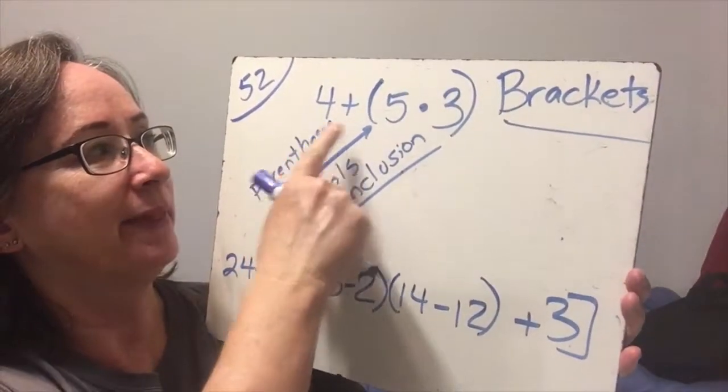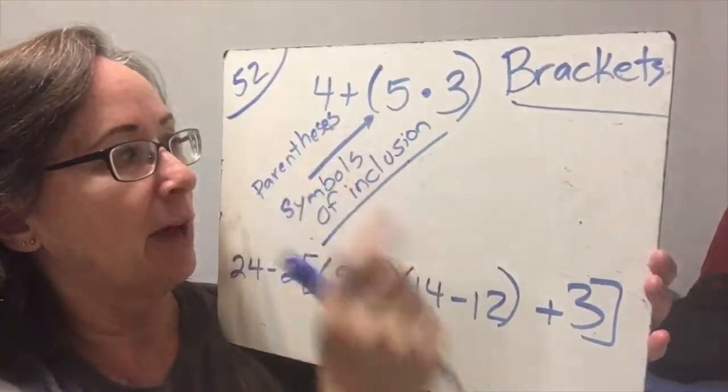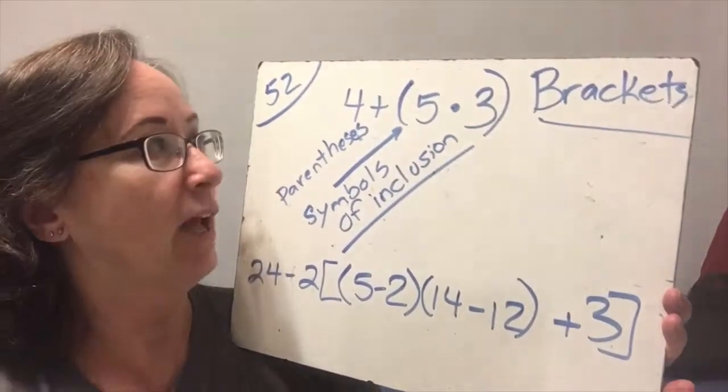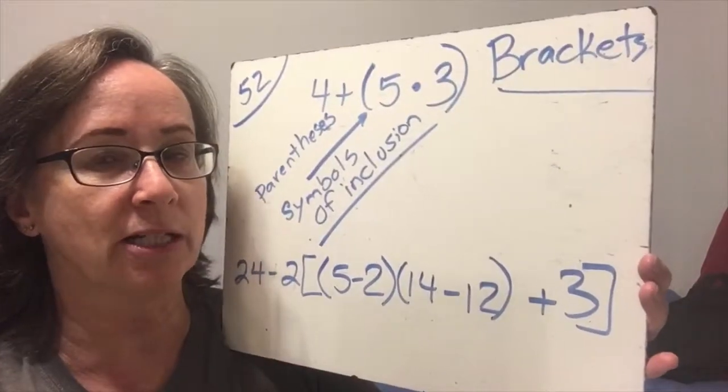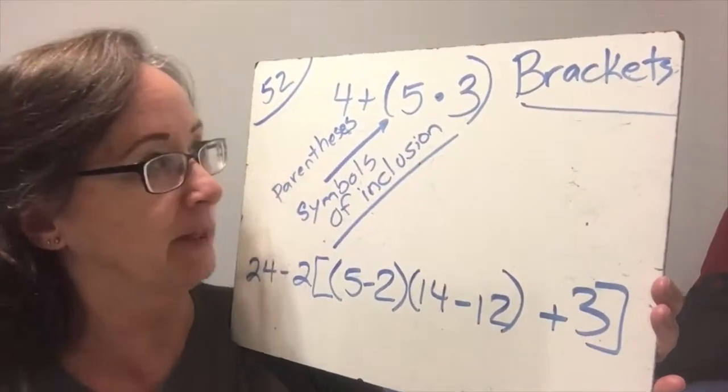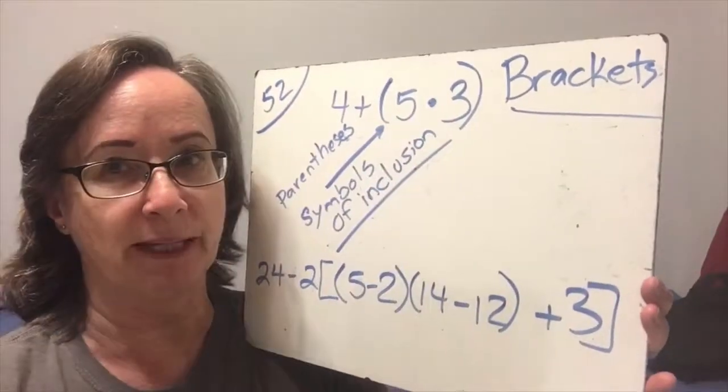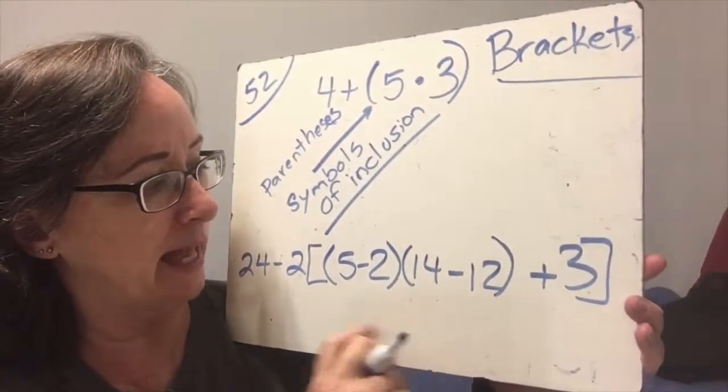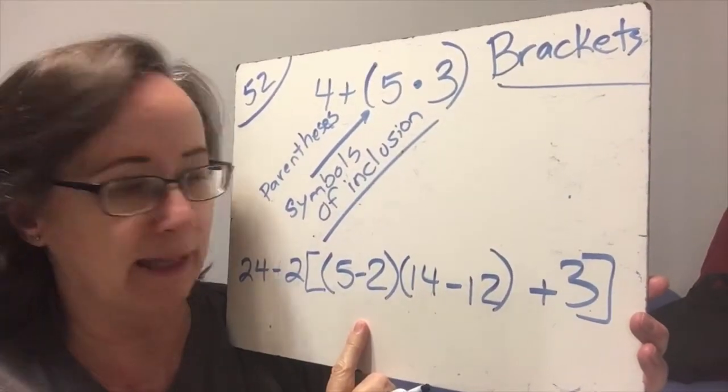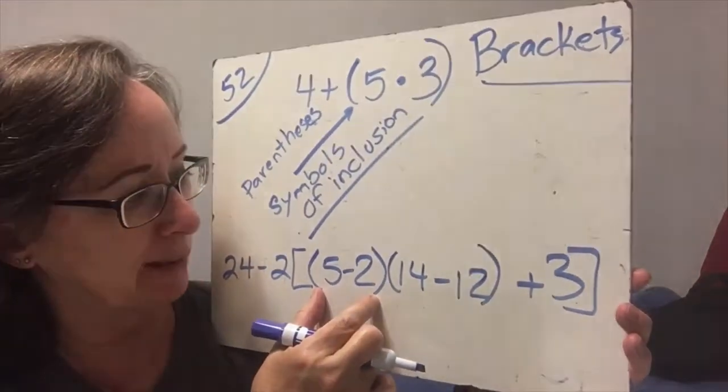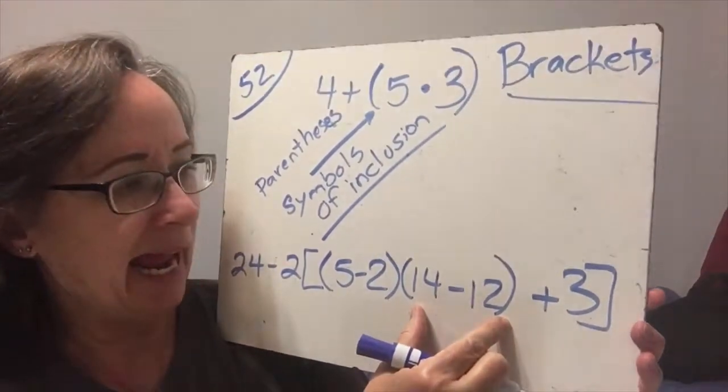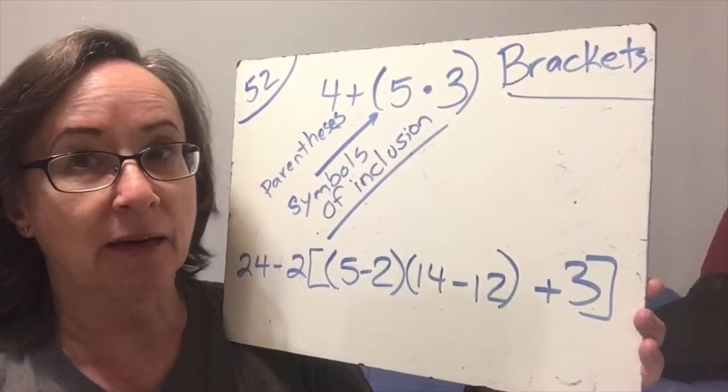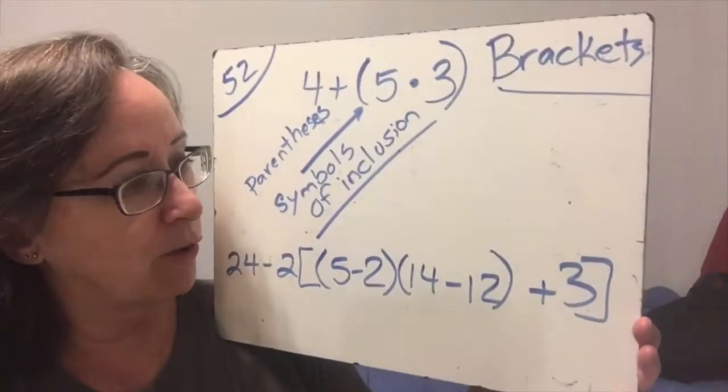So this is not a bracket. This is a parenthesis, but both parentheses and brackets are symbols of inclusion, which means we are using them to tell the person that's doing our problem that we want this part to be done first. What we often use brackets for is when we have too many things to keep straight. So we have a set of parentheses here, and then over here we have another set of parentheses. And then just to keep it all straight, we use brackets so we don't have so many parentheses that we can't tell where they start and stop. So for clarity, we use the brackets.